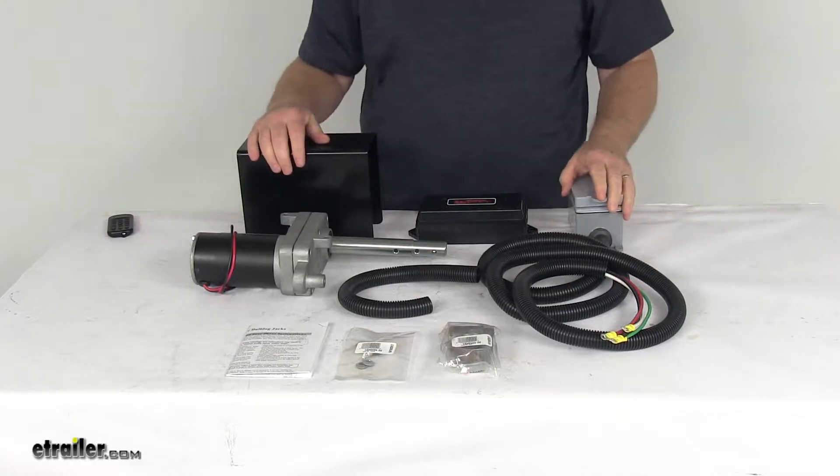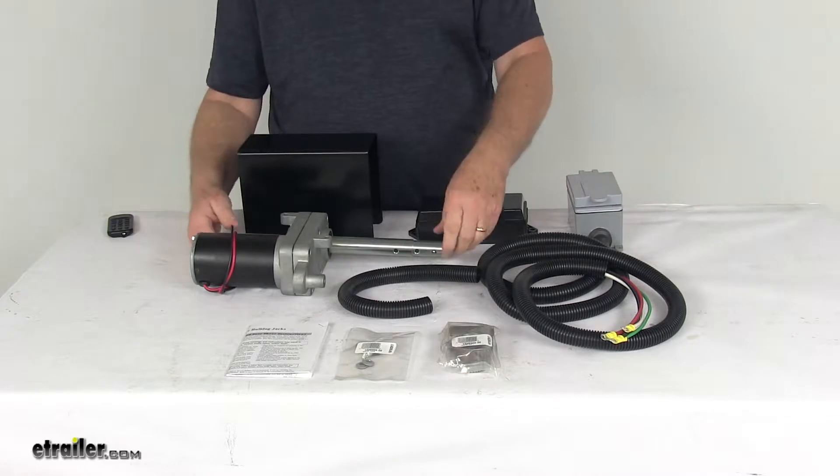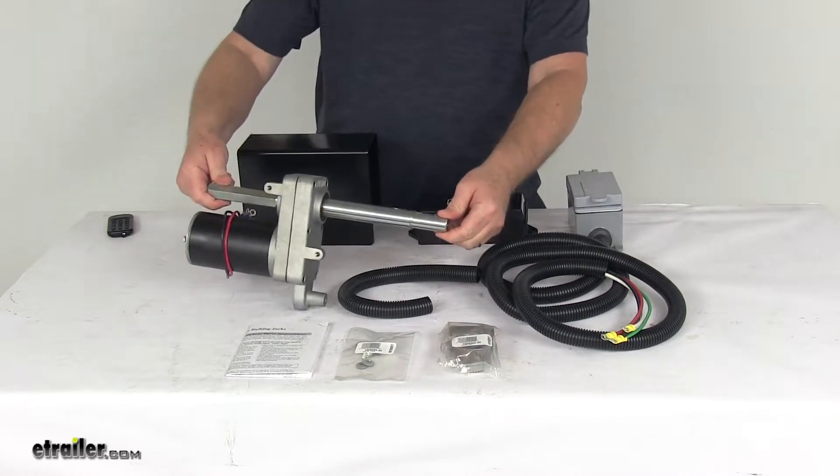Today we're going to take a look at the Bulldog Power Drive Kit for the OEM 2-Speed Planetary Jacks with the 12,000 pound capacity. This will make lifting with your Bulldog Jack faster and easier.